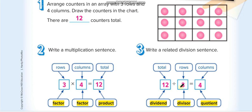In division, we use the total first, then divide by the number of rows or columns. The total is twelve. We can see there are three rows, so twelve divided by three equals four — giving us four columns. And if you divide the total by the number of columns, you get the number of rows.